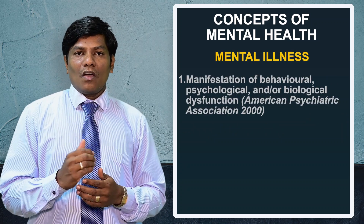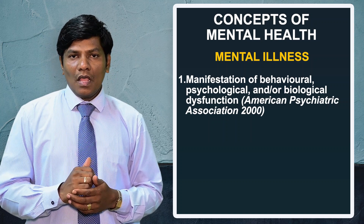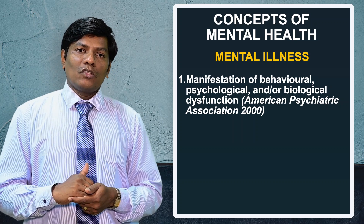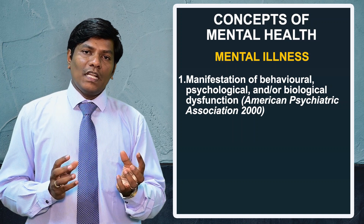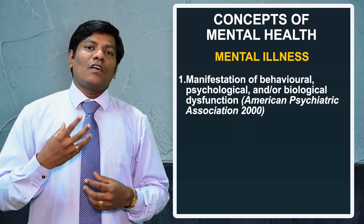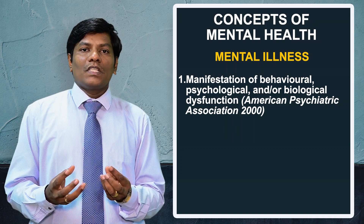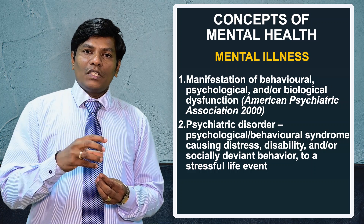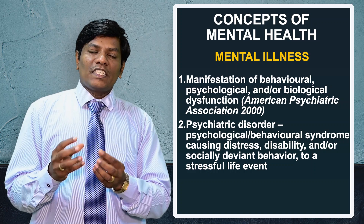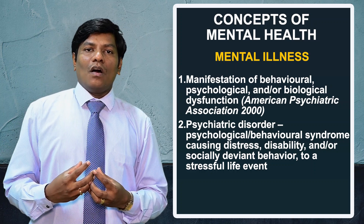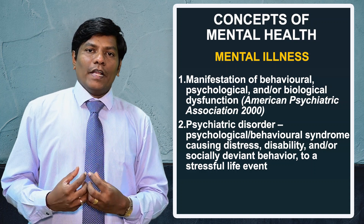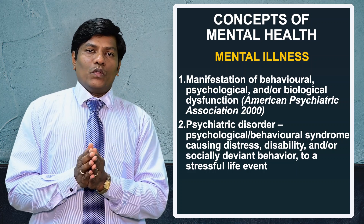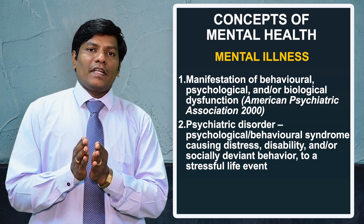Mental illness is generally known as abnormalcy. According to DSM-4, given by the American Psychiatric Association, mental illness is defined as a psychological, pathological, or biological dysfunction of an individual. This leads to a psychotic disorder where a person has psychological, biological, or pathological syndromes that disrupt normal activity and daily functioning.